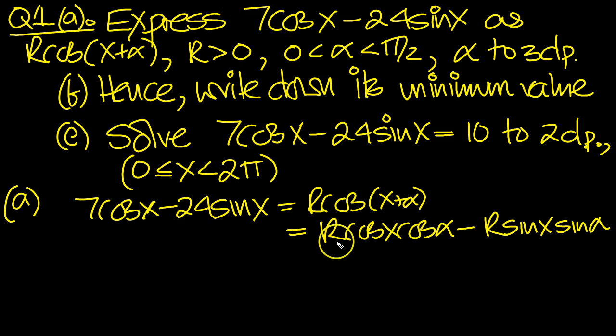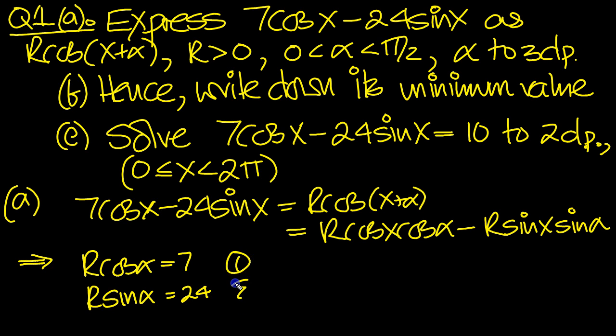Now we can equate the values. For the cosine, 7 is r·cos(α), so r·cos(α) equals 7 from equating the cosine coefficient. The 24 is equal to r·sin(α). So r·sin(α) equals 24. These are our two equations in two unknowns which we can now solve.